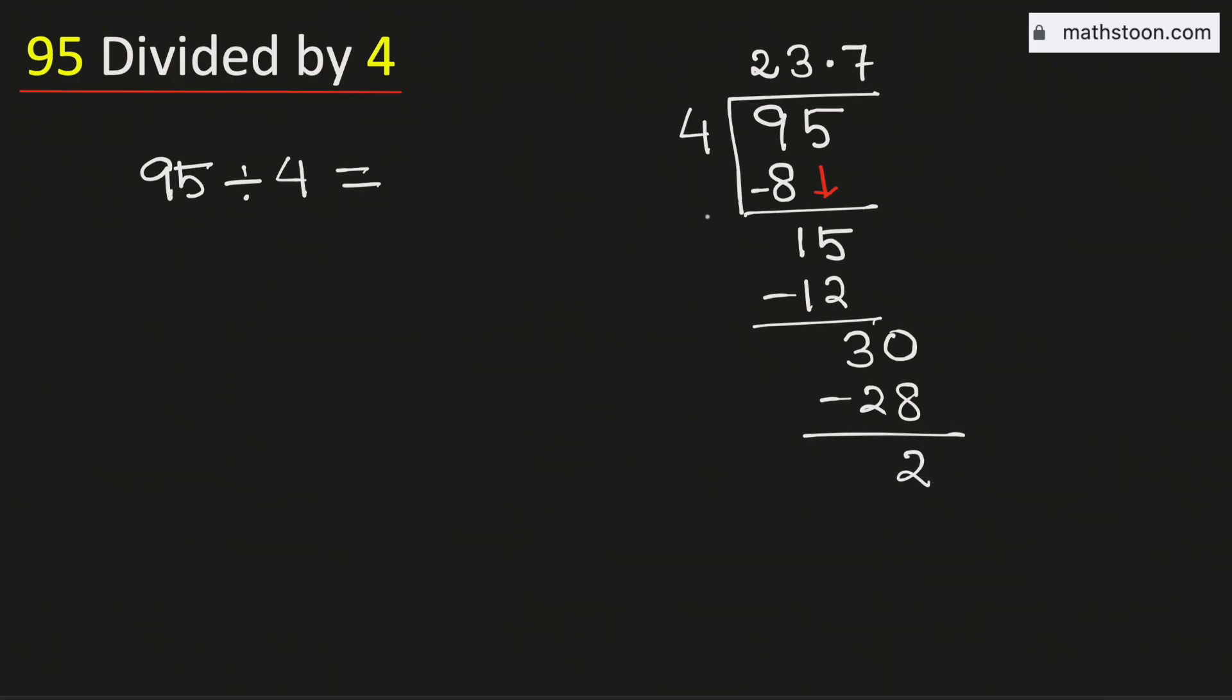Again 2 is less than 4. So we will again borrow 10. And we know that 4 times 5 is 20. Subtract and we get 0.